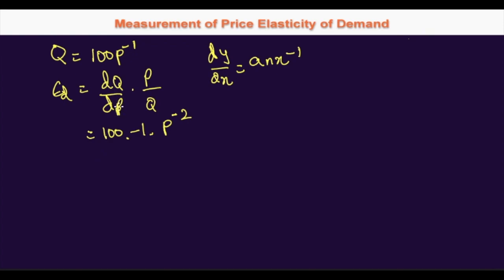Here you will find that dQ over dP would be actually, times price over quantity. So dQ over dP would be minus 100P to the power minus 2, and P is P, and Q you can write it as 100P to the power minus 1.